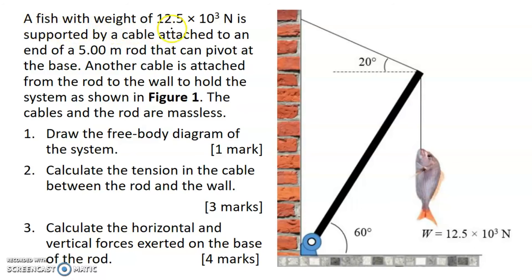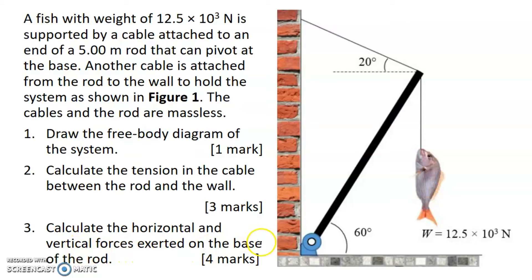A fish with weight of 12.5 times 10 to the power of 3 newton is supported by a cable attached to an end of a 5 meter rod that can pivot at the base. Another cable is attached from the rod to the wall to hold the system as shown in figure 1. The cables and the rod are massless. Number 1: draw the free body diagram of the system. Number 2: calculate the tension in the cable between the rod and the wall. And number 3: calculate the horizontal and vertical forces exerted on the base of the rod.